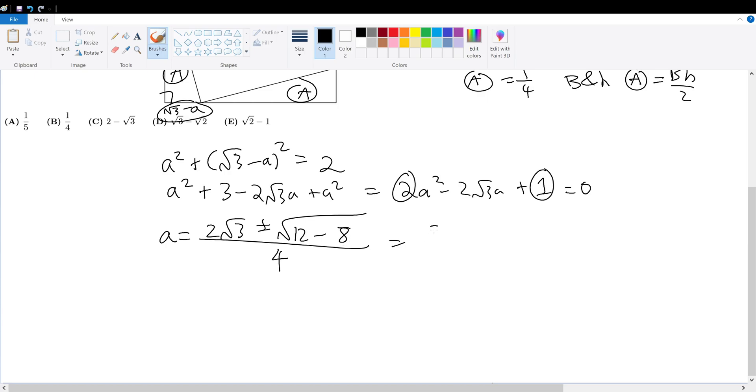So that's the same thing as 2 root 3 plus minus root 4 over 4. That's 2 root 3 plus minus 2 over 4, which is root 3 plus minus 1 over 2. With this expression, how do we know if we take the subtraction or addition? Simple. What is root 3? Root 3 is 1.71. What is 1? 1 is just 1. So obviously, if we subtract 1, we'll get a positive number.